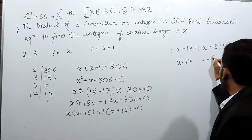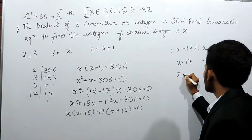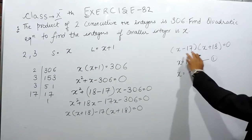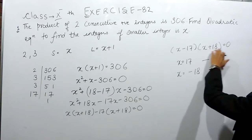And the second value is x equals to minus 18, on keeping this equals to 0 and this equals to 0.